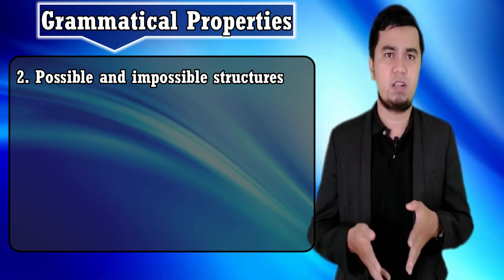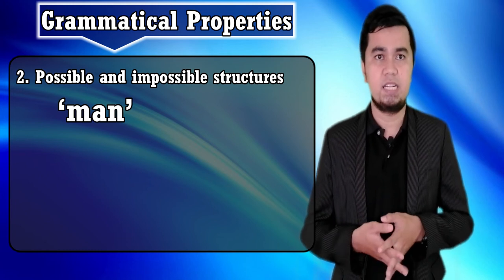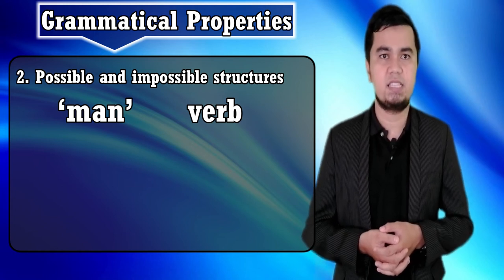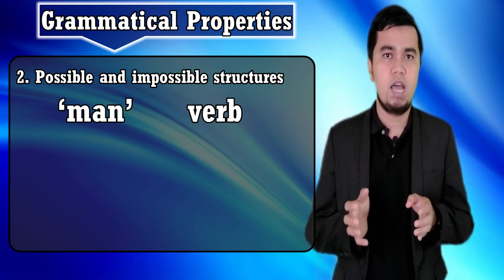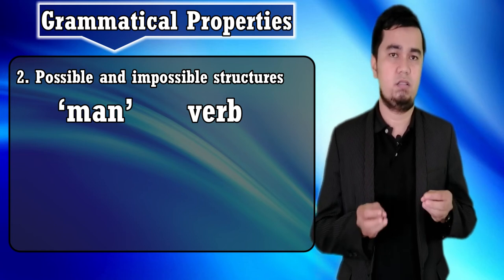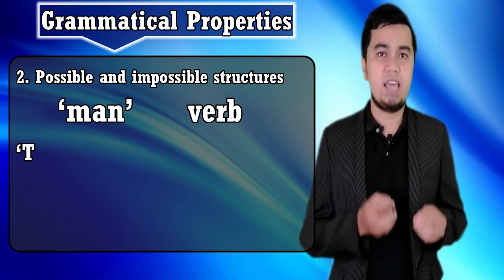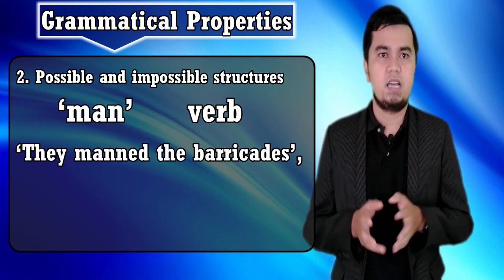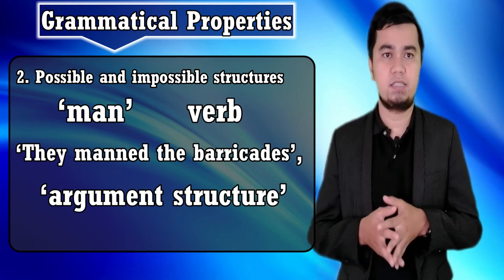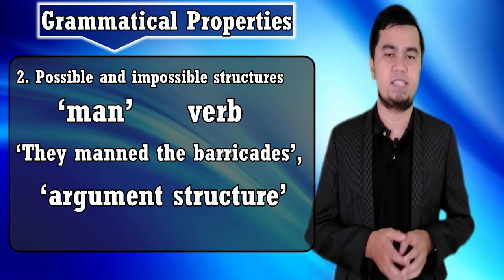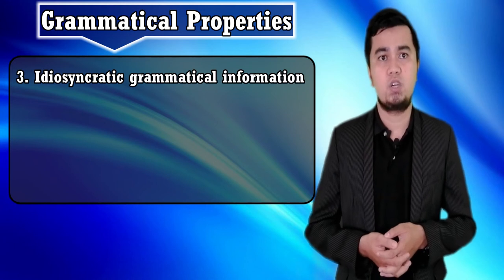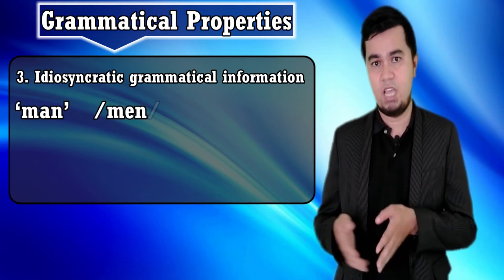The second aspect of knowledge is possible and impossible structures. We know the type of structure that 'man' can be used in. When 'man' is a verb, the sentence must have an animated subject — 'she manned the barricades,' not 'it manned the barricades.' So it should be 'they manned the barricades.' This is called the argument structure of the verb, which determines which arguments may or may not go with the structure of the sentence.